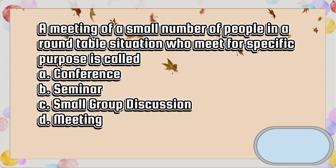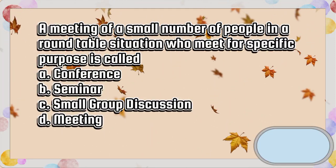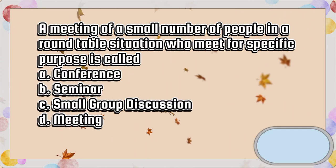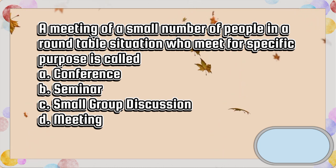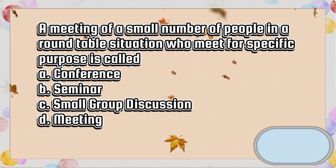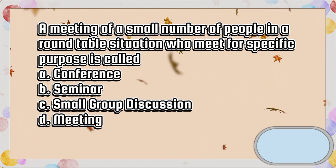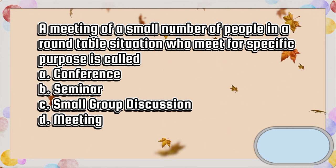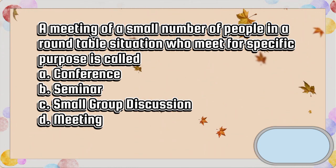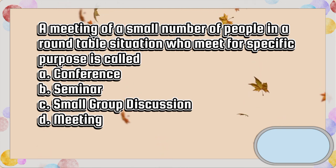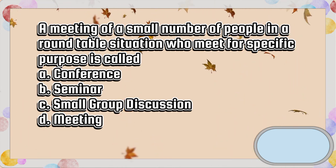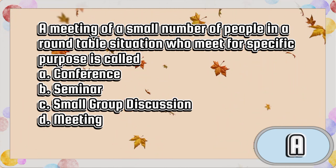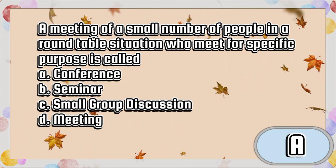A meeting of a small number of people in a round table situation who meet for a specific purpose is called: A. Conference, B. Seminar, C. Small group discussion, D. Meeting. The answer is letter A.